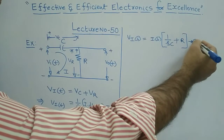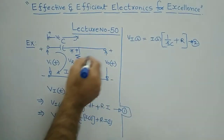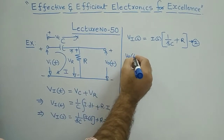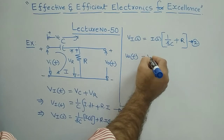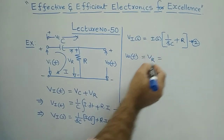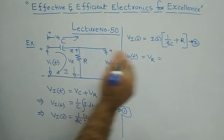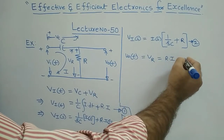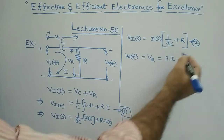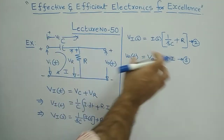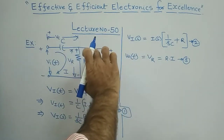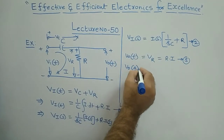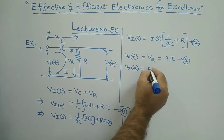The output V_naught(t) is the voltage across the resistor, which is R·I. Applying the Laplace transformation to the output stage, V_naught(s) = R·I(s).